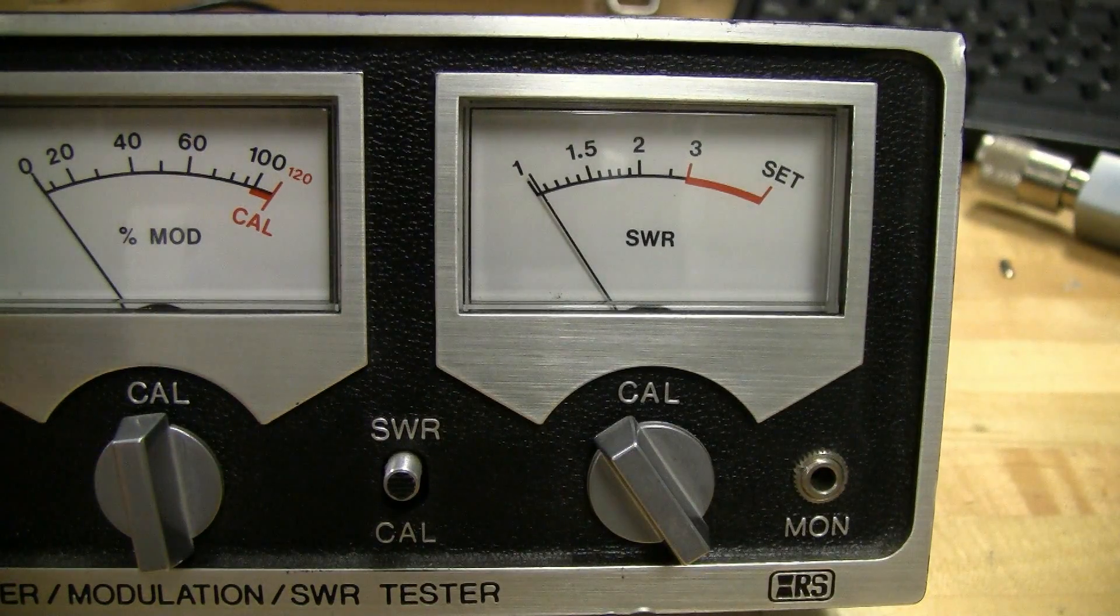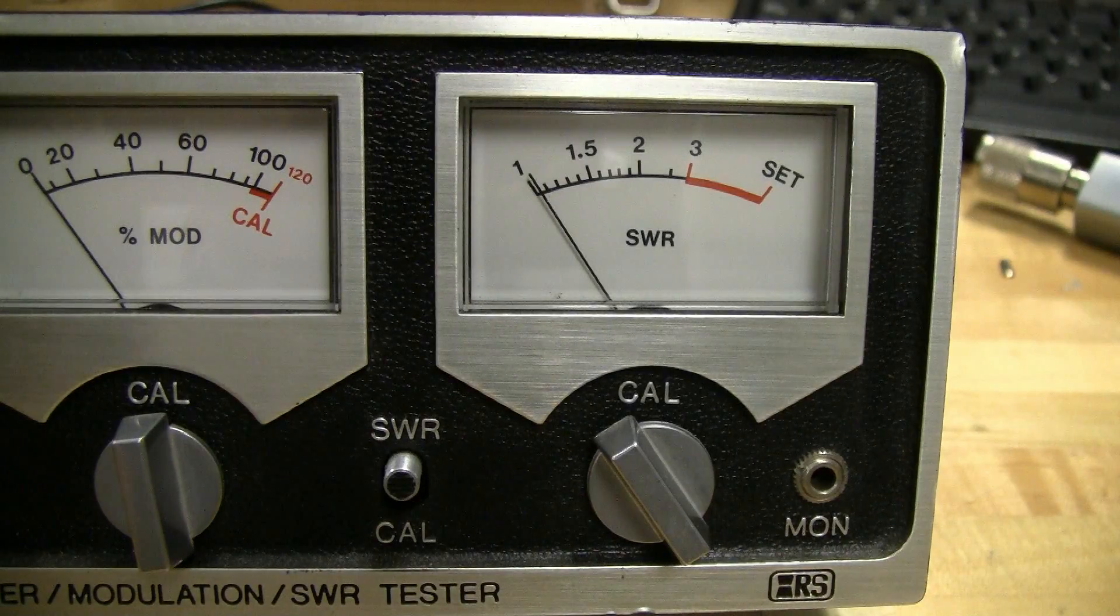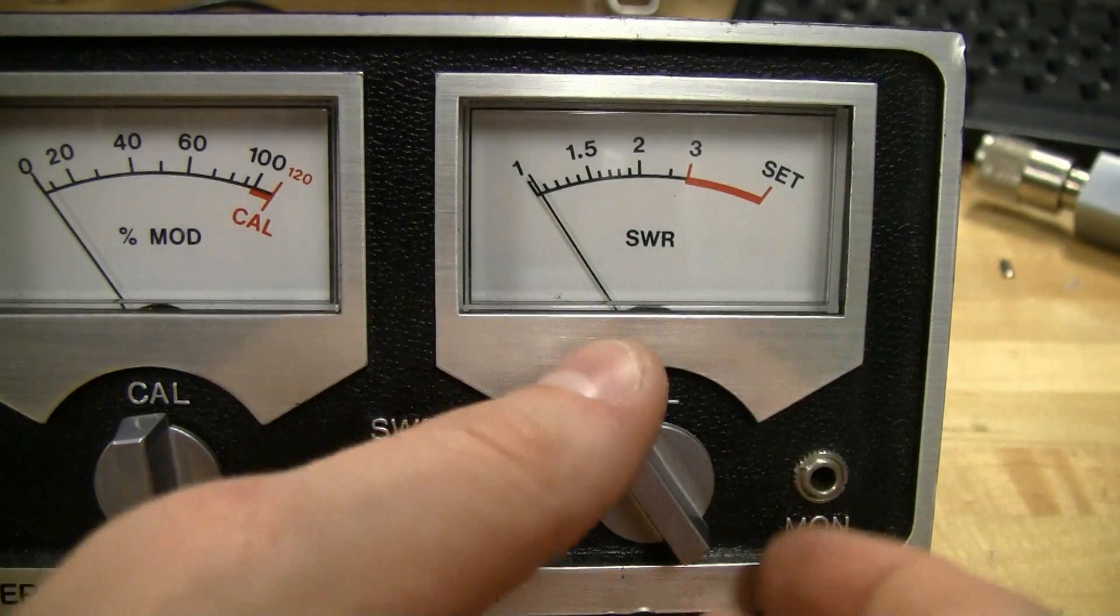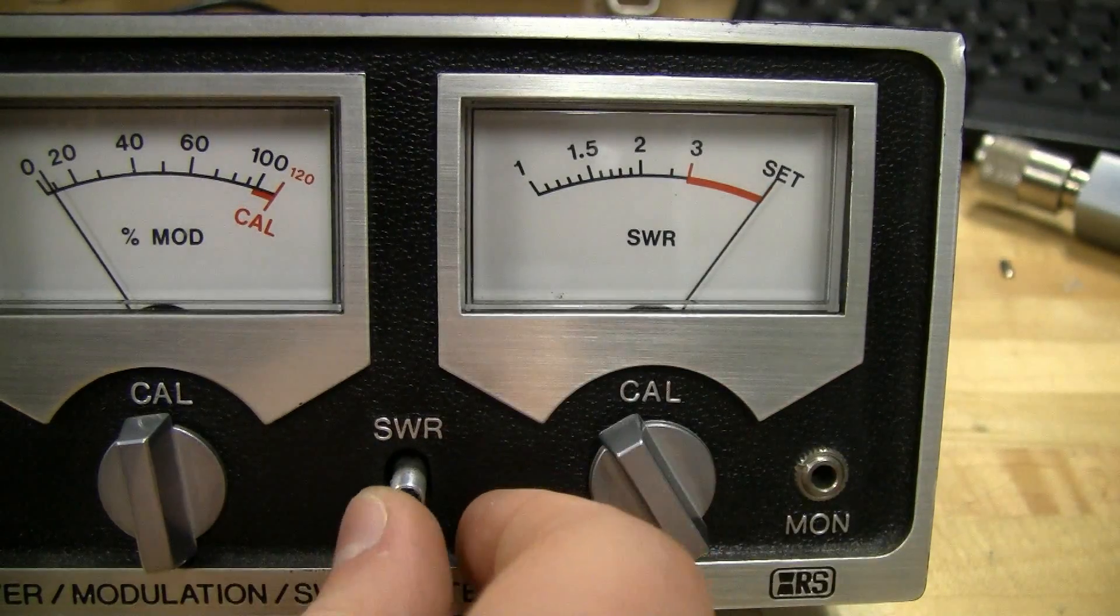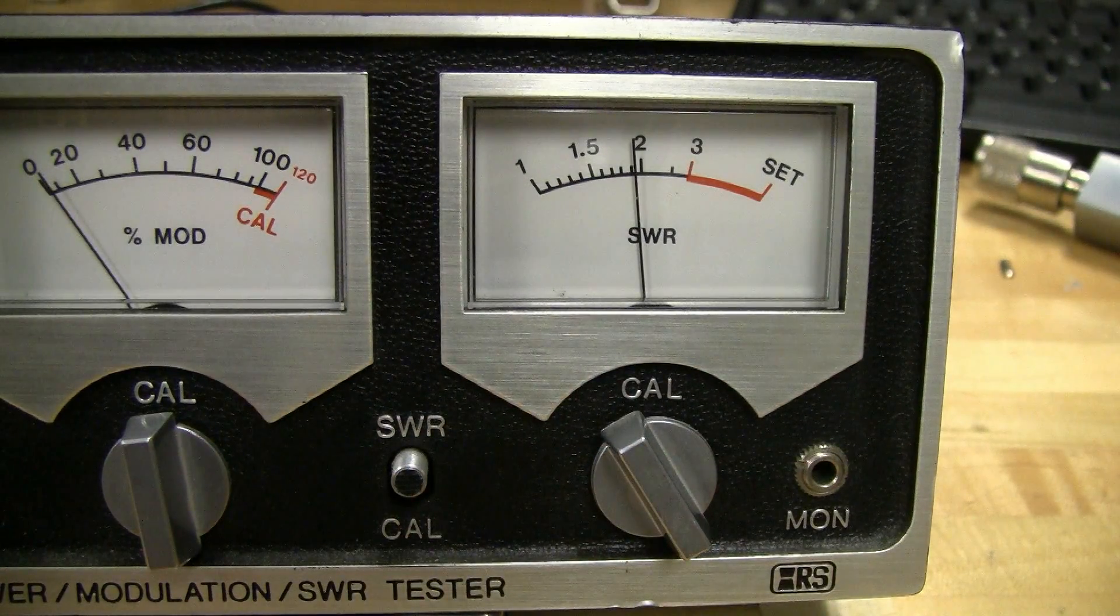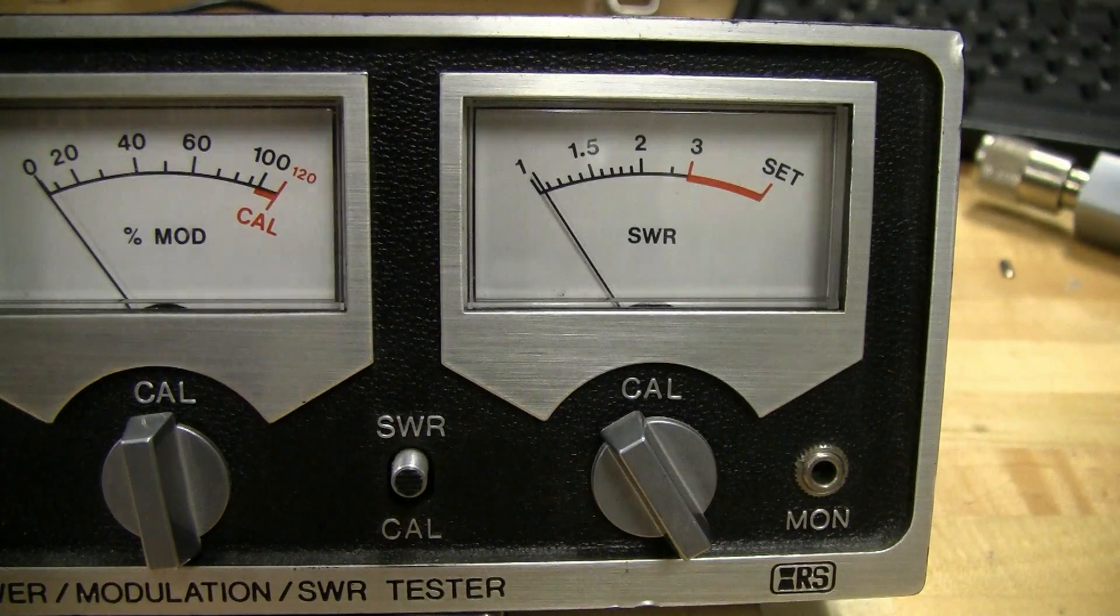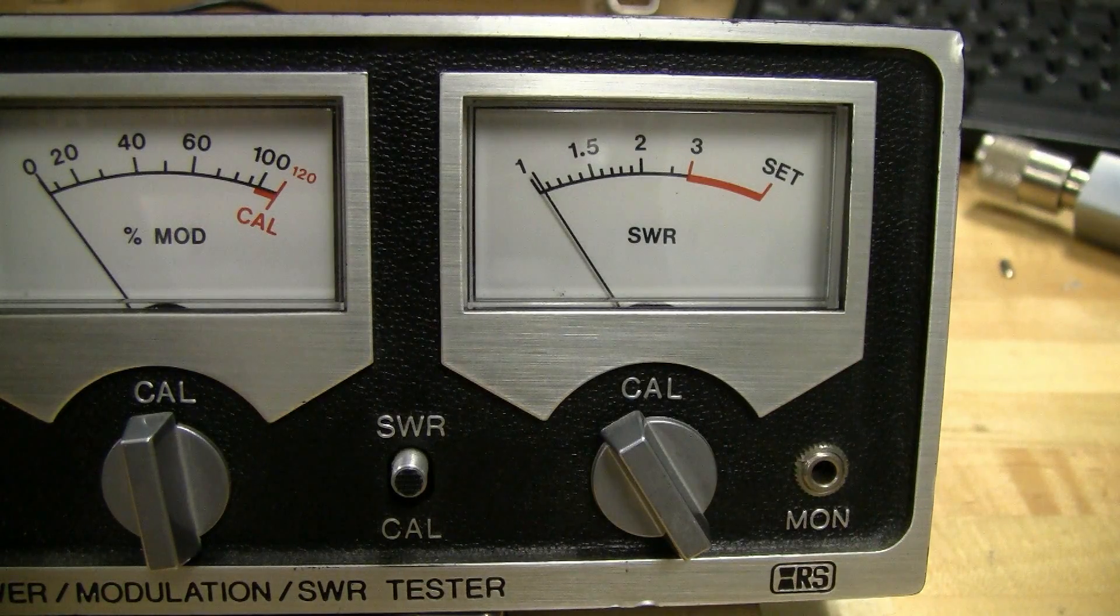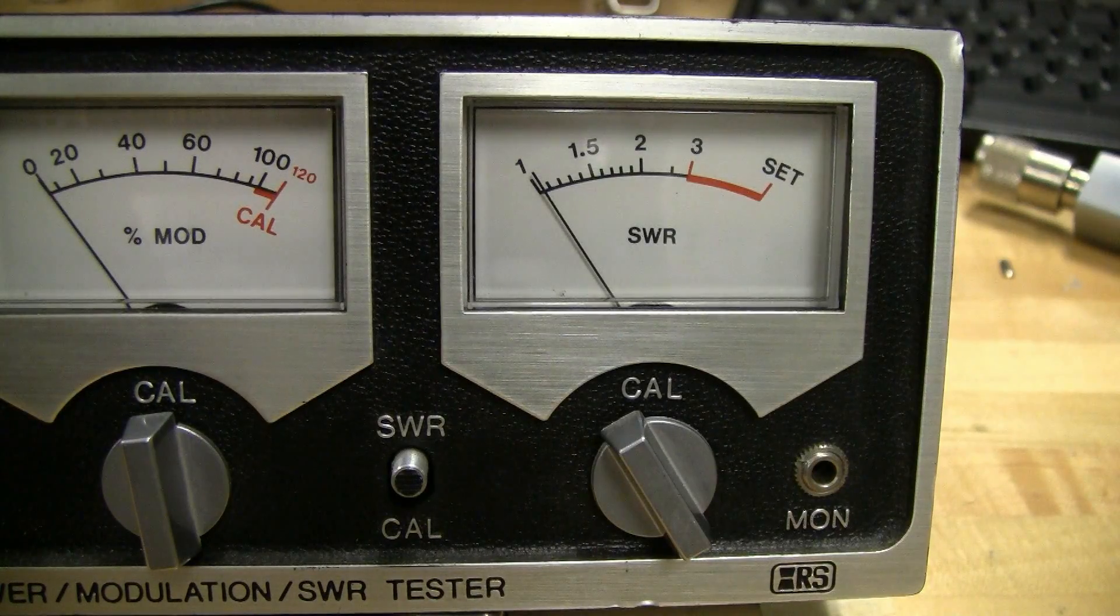We'll switch over here to the 100 ohm. Cal, set, flip back, and we're looking about, I'll call that 1.92. The calculated on that, obviously 100 over 50 is 2.